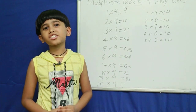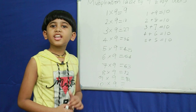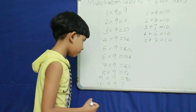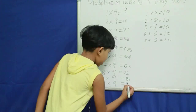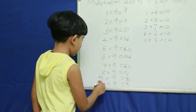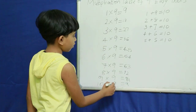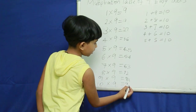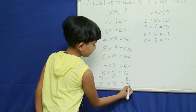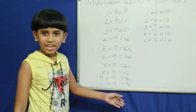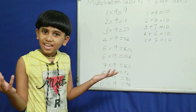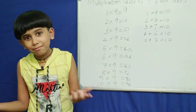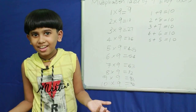Next, predecessor of 10 — 9. So we get 90. Easy, isn't it?